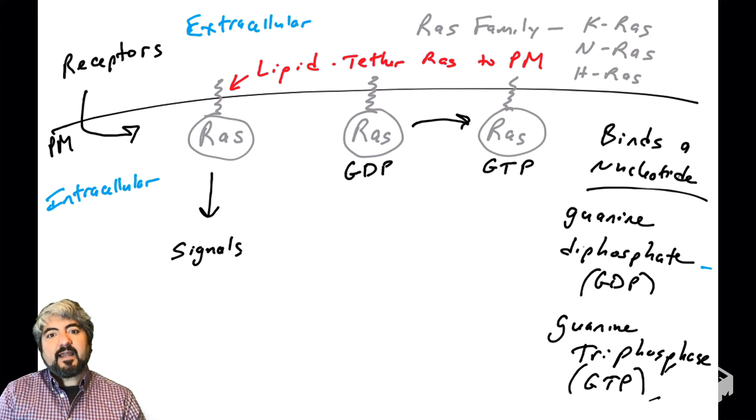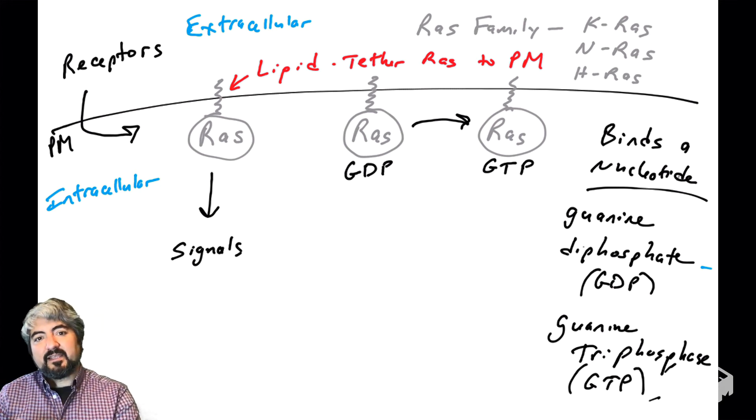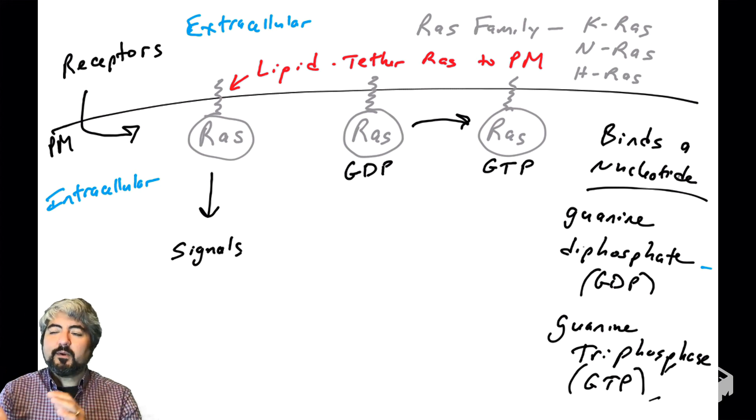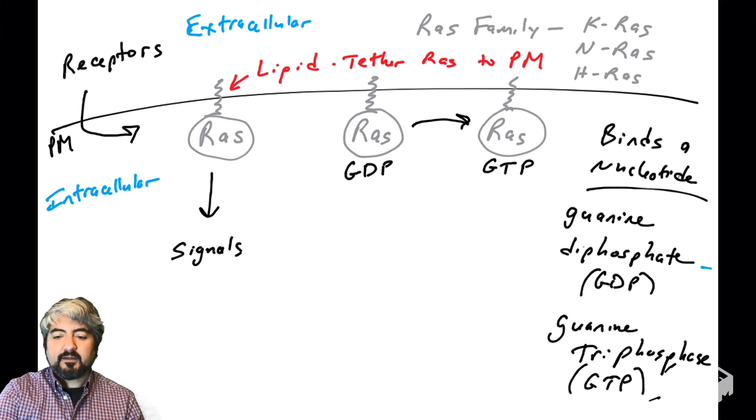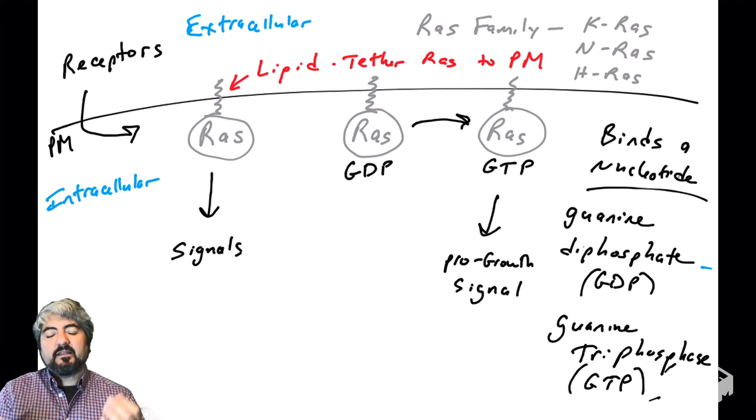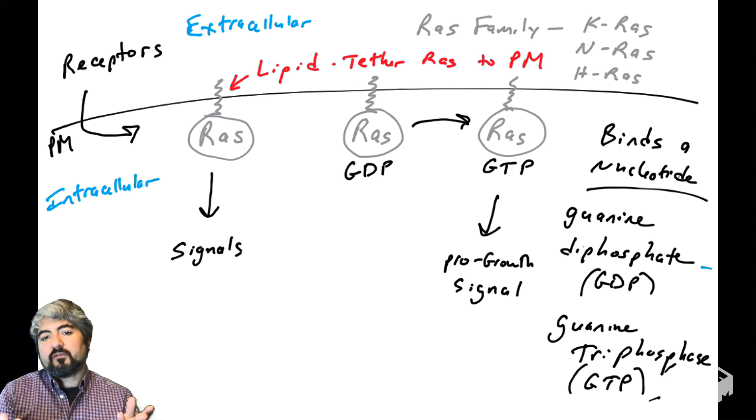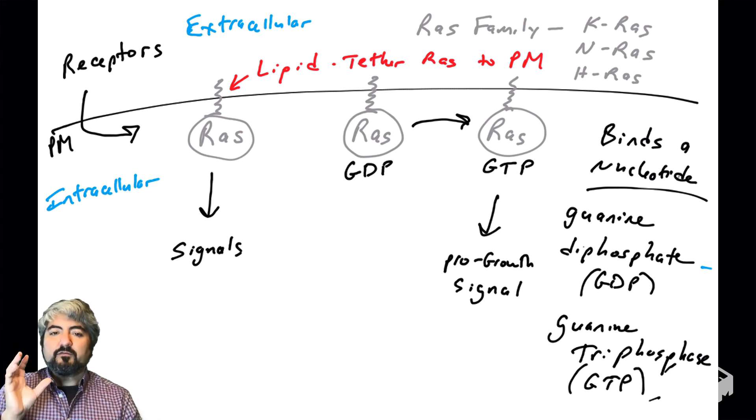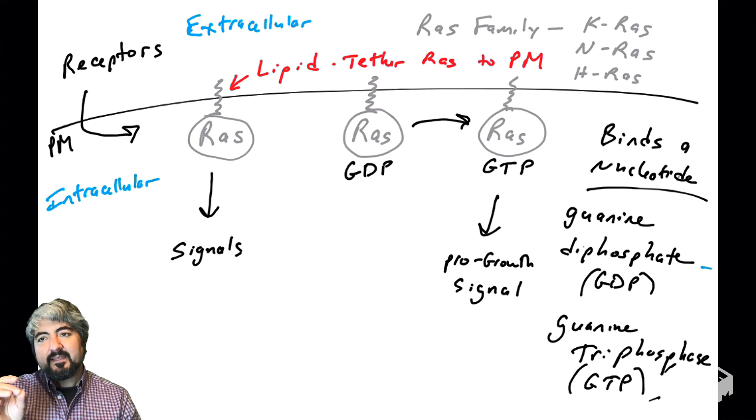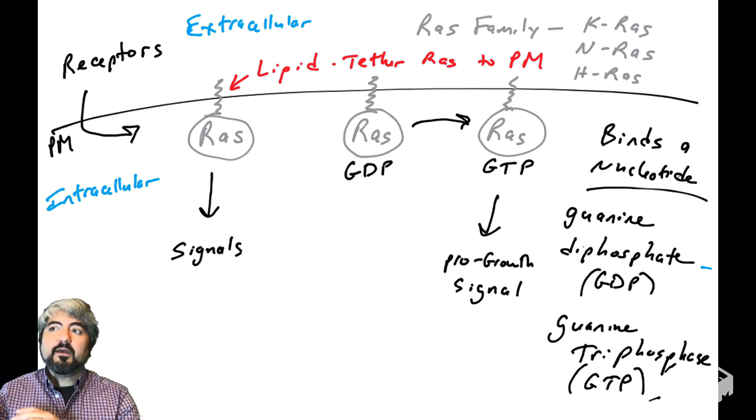RAS can get converted from binding GDP to GTP—it can switch from one phase to the other. The thing to know about these different phases or states of RAS is that GTP-bound RAS is actually the pro-growth version. When RAS is bound to GTP, it will send signals into the cytoplasm of the cell—pro-growth signals that we're going to cover extensively in later videos.